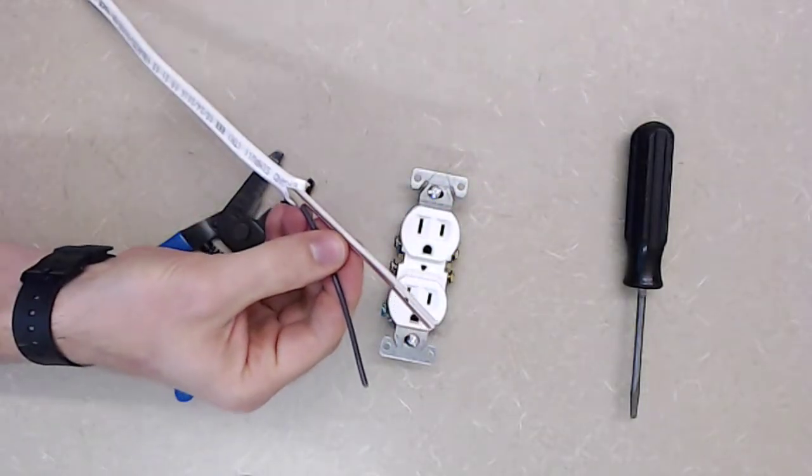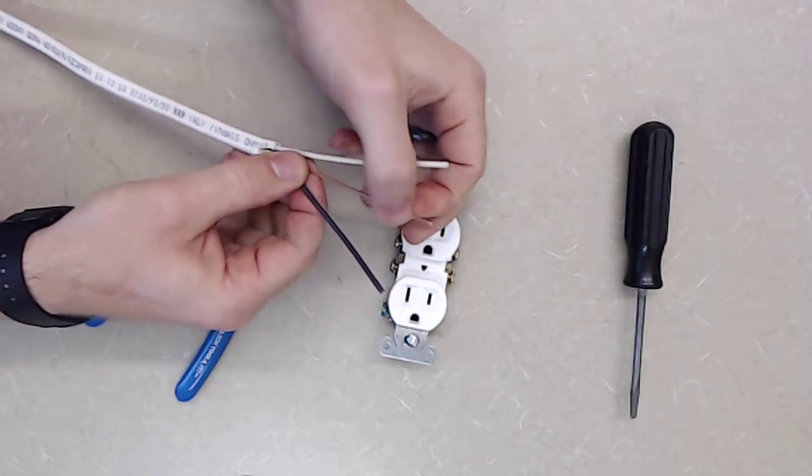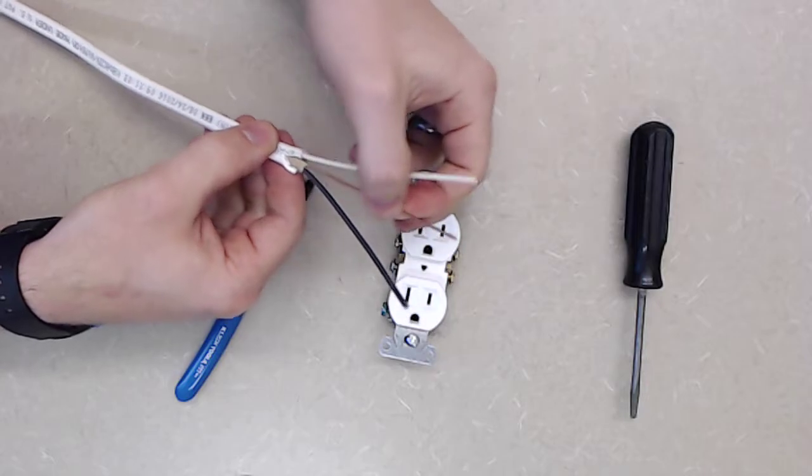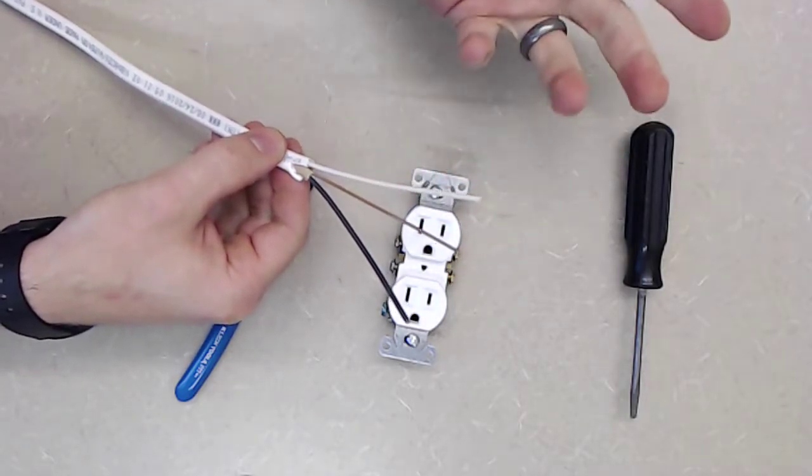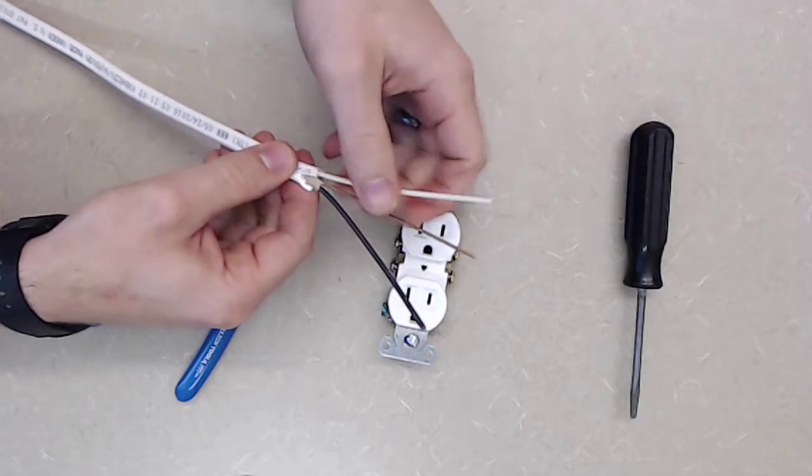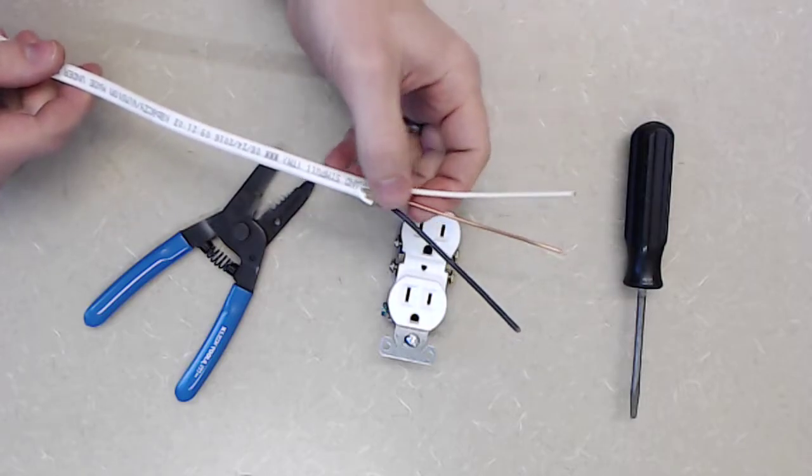So now I have my white, my black, my black, and my ground. The ground is usually always exposed to save cost on insulation. The ground is just bare. Some wires you'll see green or green with yellow stripes, but with Romex it's going to be bare.